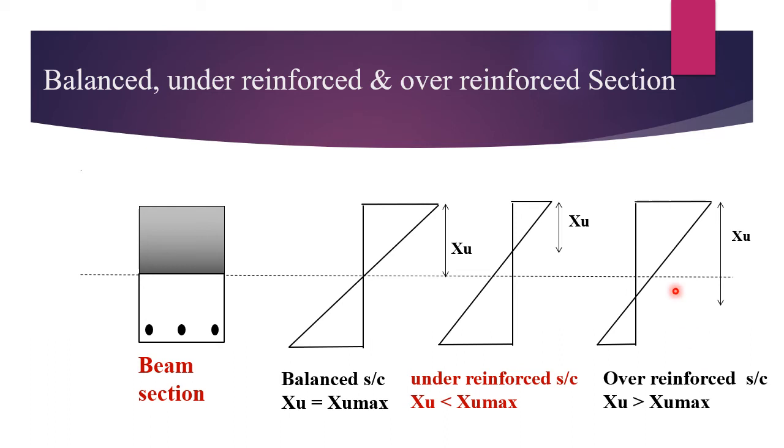Then over-reinforced section. In that section the steel percentage is more than required for the balanced section. And in that section, the concrete is stressed to its maximum permissible stress level first. Therefore, the beam will fail initially due to the concrete.